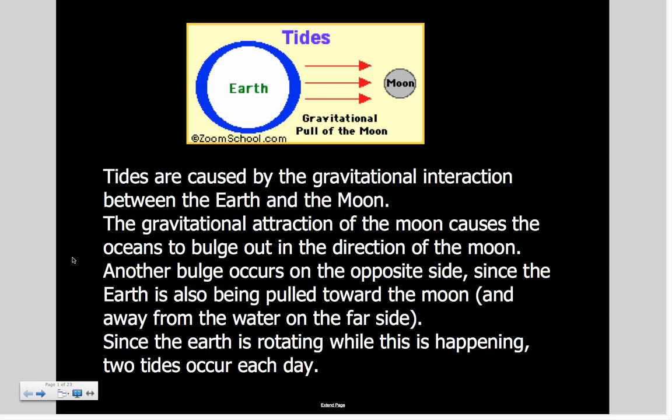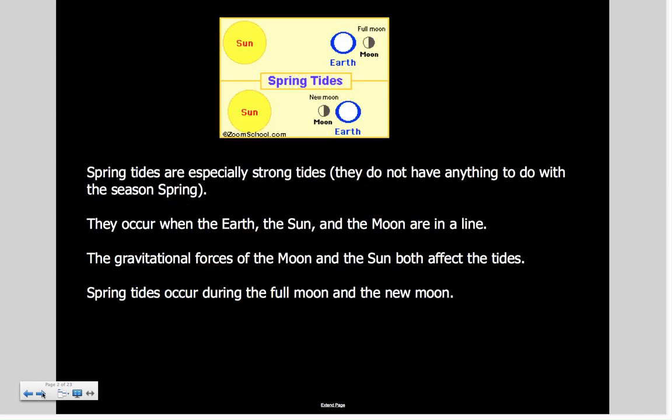The bulge happens on both sides, not just on the side where the Moon is. It happens on the side closest to the Moon and the side farthest away. Because the Moon is moving around the Earth and the Earth is rotating while this is happening, two tides happen every day—so there are actually four tides, but let's look at the specific ones related to the moon cycle.